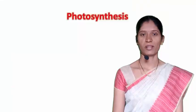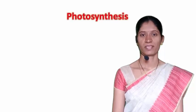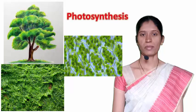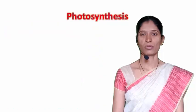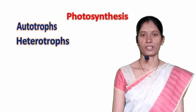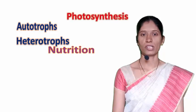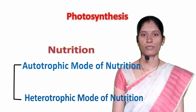Photosynthesis is a very important biological process in nature with which plants synthesize their own food. Some organisms like plants, some algae and some bacteria synthesize their own food, while other organisms cannot and depend on others for food supply. Organisms that synthesize their own food are called Autotrophs, and organisms that cannot are called Heterotrophs. That is, there are two modes of nutrition: Autotrophic and Heterotrophic.